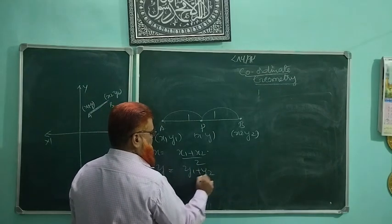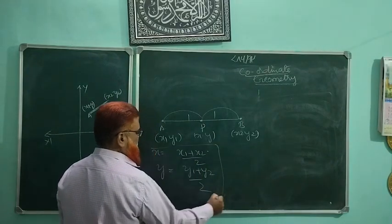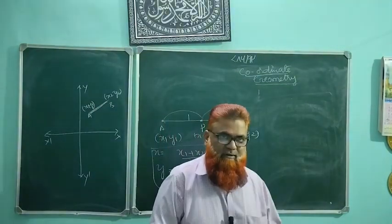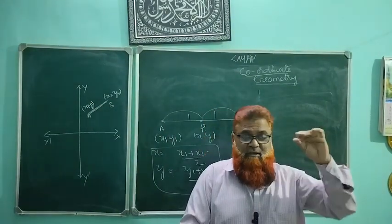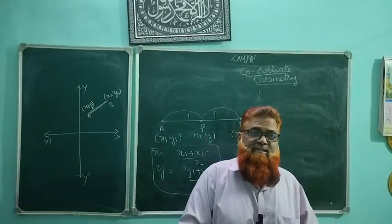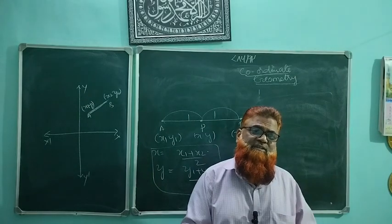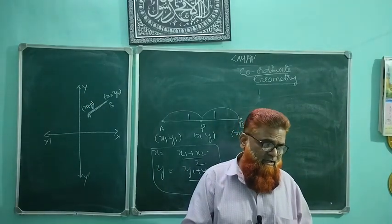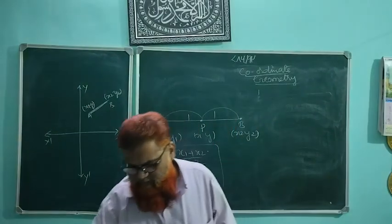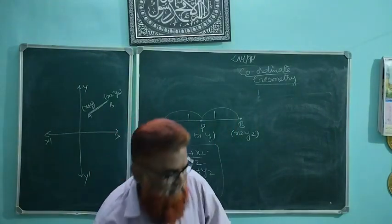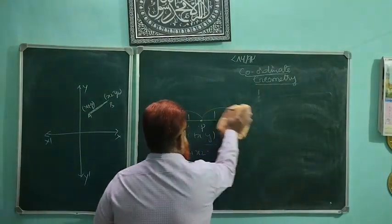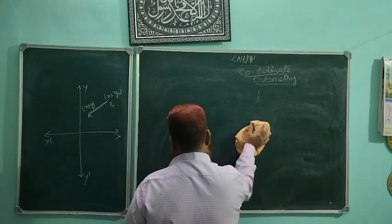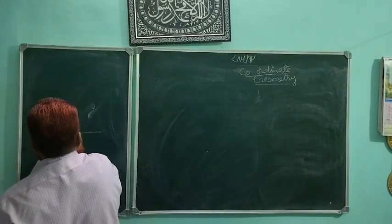So the midpoint formula gives: x equals (x1 plus x2) divided by 2, and y equals (y1 plus y2) divided by 2. This is the midpoint formula. The third topic is finding the area of a triangle using a coordinate geometry formula — I will show you that and then end today's video.